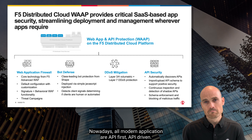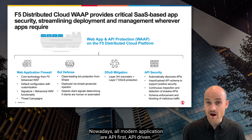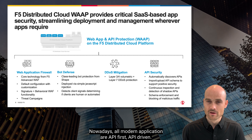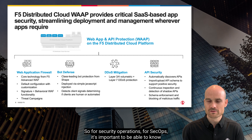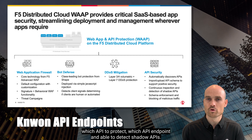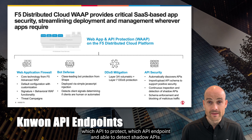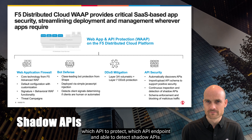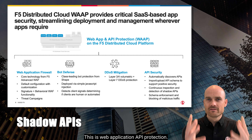Nowadays, all modern applications are API-first and API-driven. For security operations — SecOps — it's important to know which APIs to protect, which API endpoints, and to be able to detect shadow APIs. This is WAAP: Web Application and API Protection.